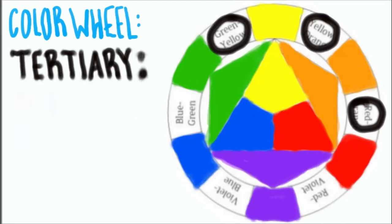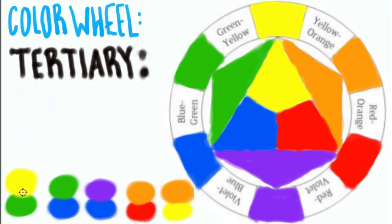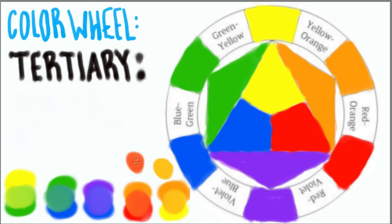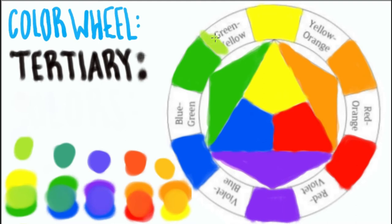The ones that are circled are called tertiary colors. These colors are made by mixing a primary color with a secondary color — like green and yellow make yellow-green — and the colors that are mixed together become the name of the color. As you can see below, I am mixing one primary color with one secondary color to achieve the tertiary colors.